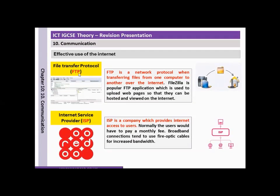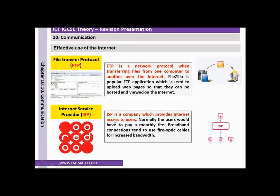FTP — File Transfer Protocol — is a network protocol for transferring files from one computer to another. FileZilla is a popular FTP application used to upload web pages so they can be hosted and viewed on the internet. An Internet Service Provider, or ISP, provides internet access to users, normally for a monthly fee. Broadband connections tend to use fibre optic cables for increased bandwidth, and the ISP would also provide users with a router to connect to the internet.